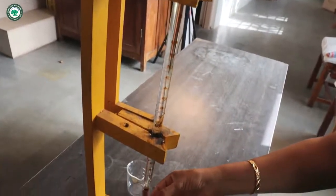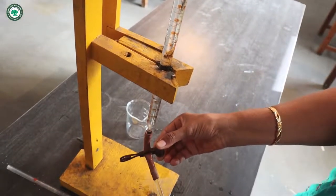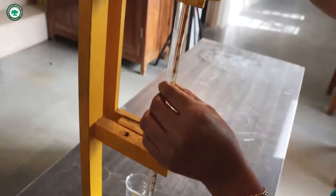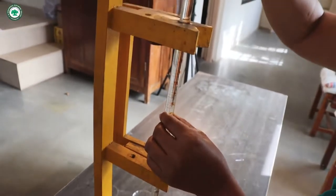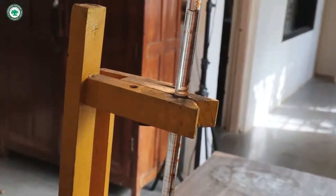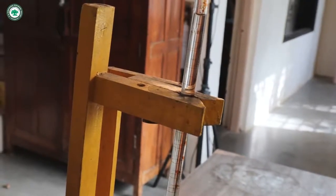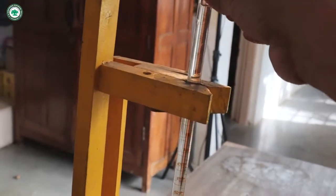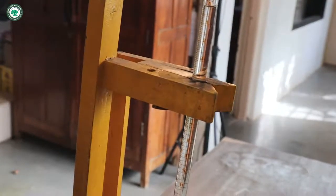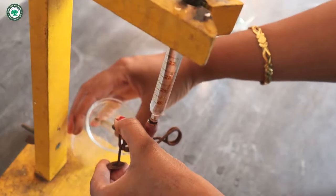Remove the air bubble with the help of pinch cork. Adjust the zero level. Now take a 10 ml distilled water from buret in 100 ml beaker.